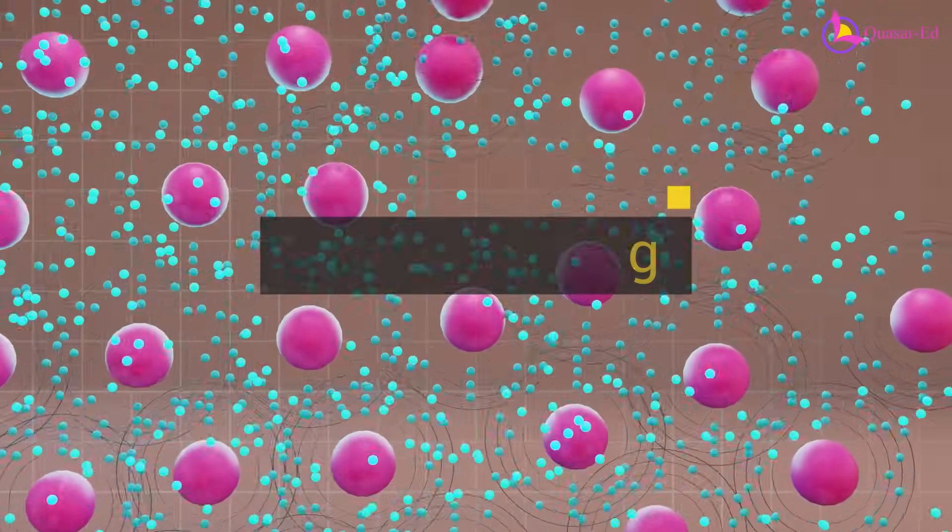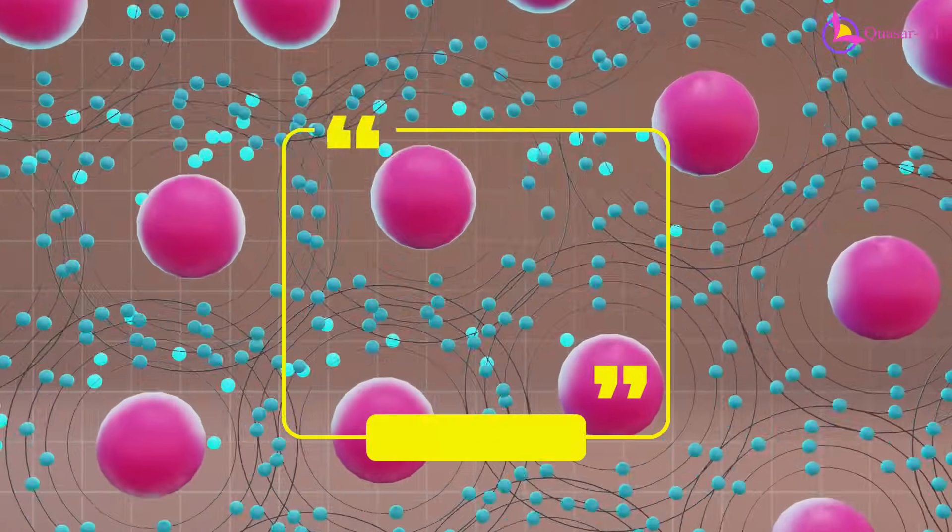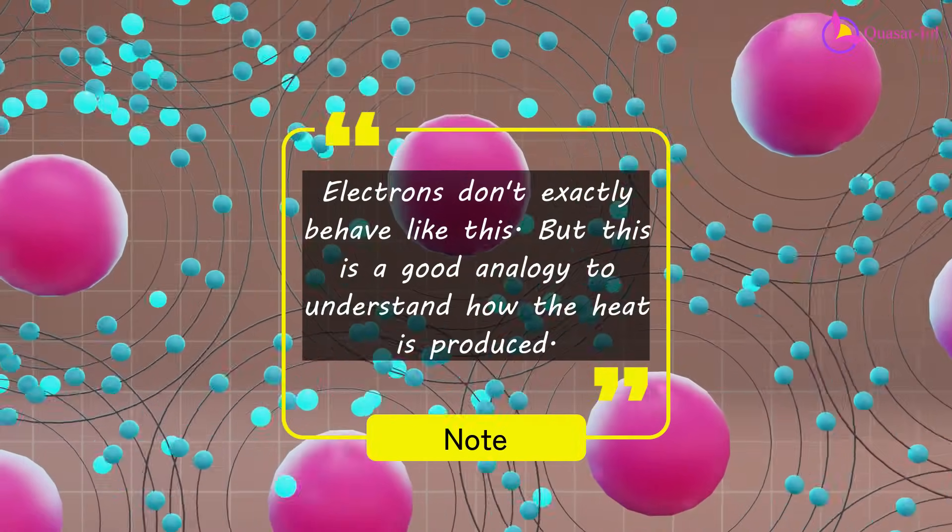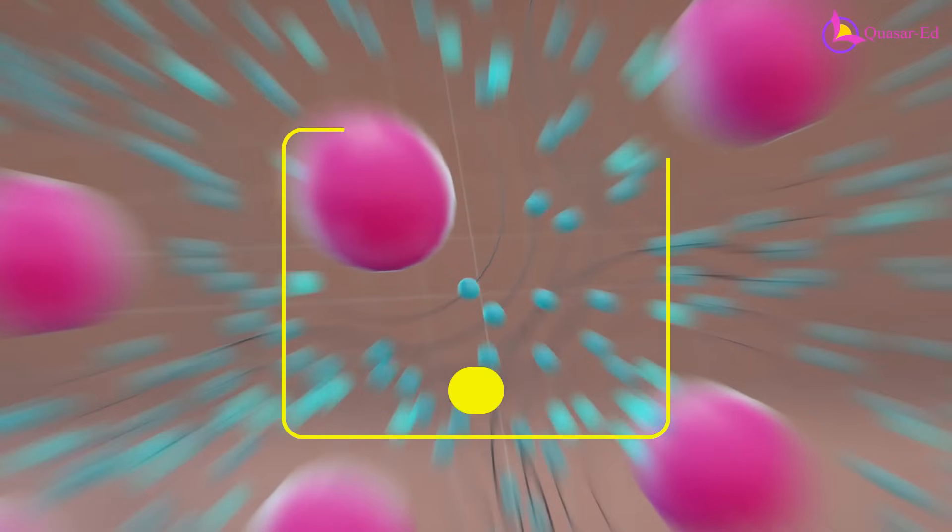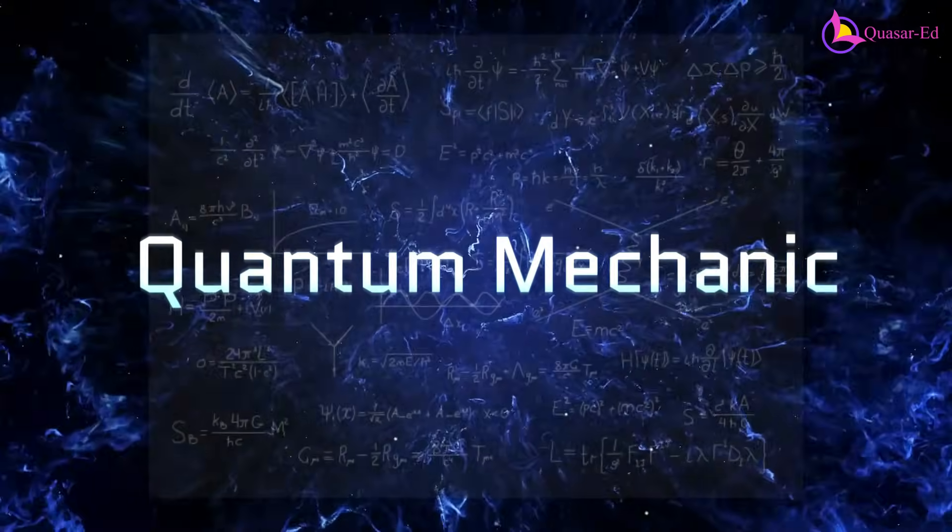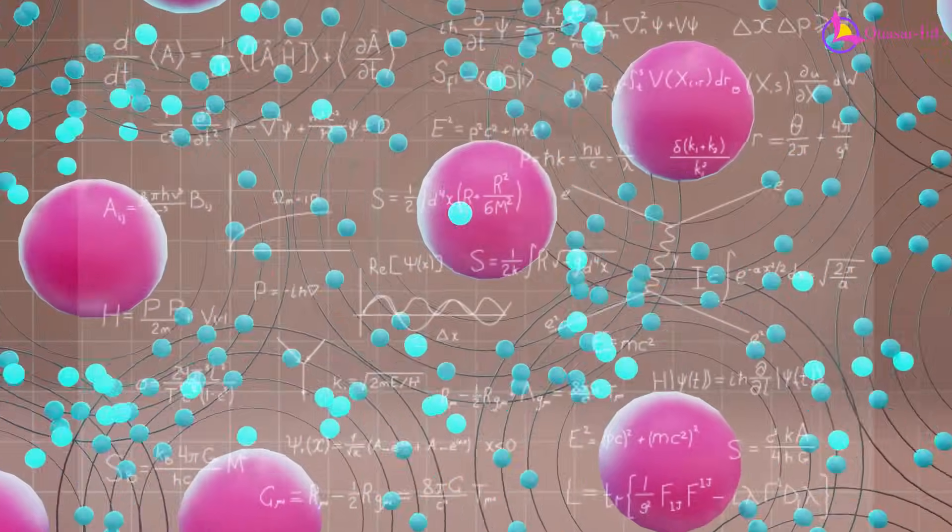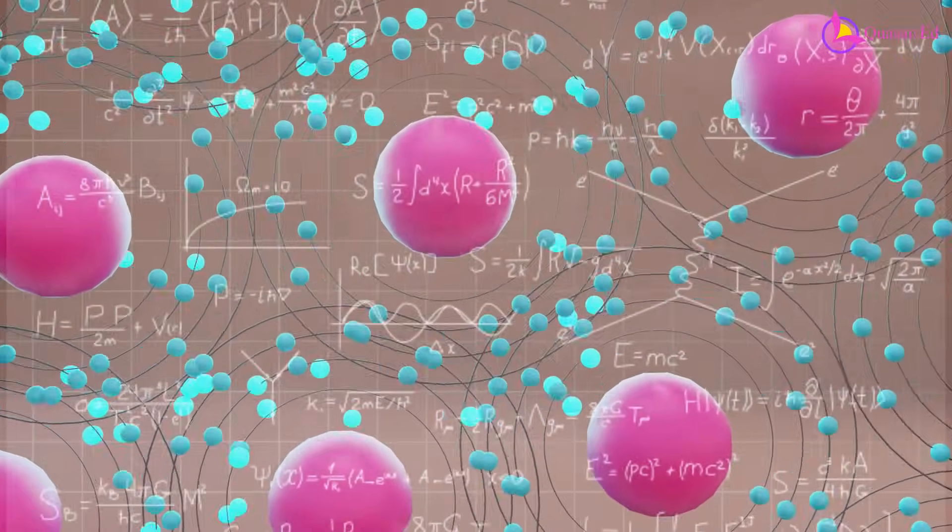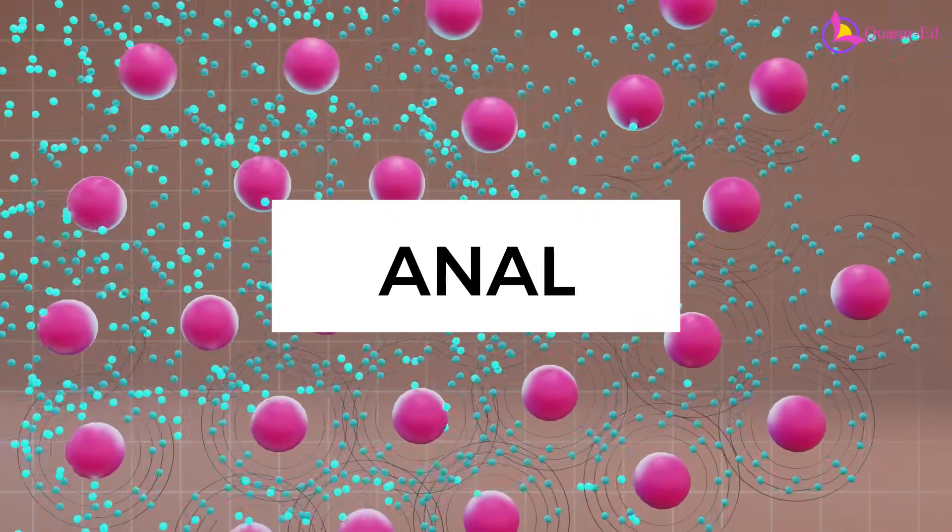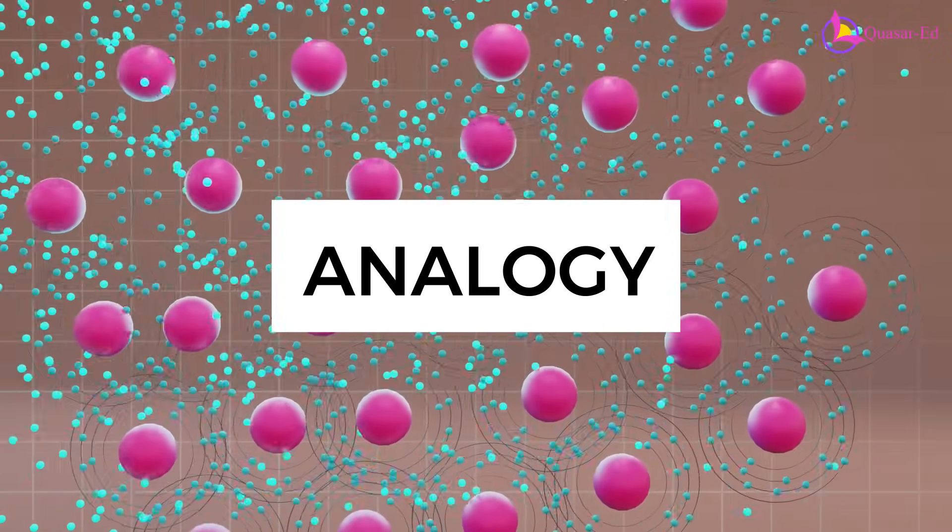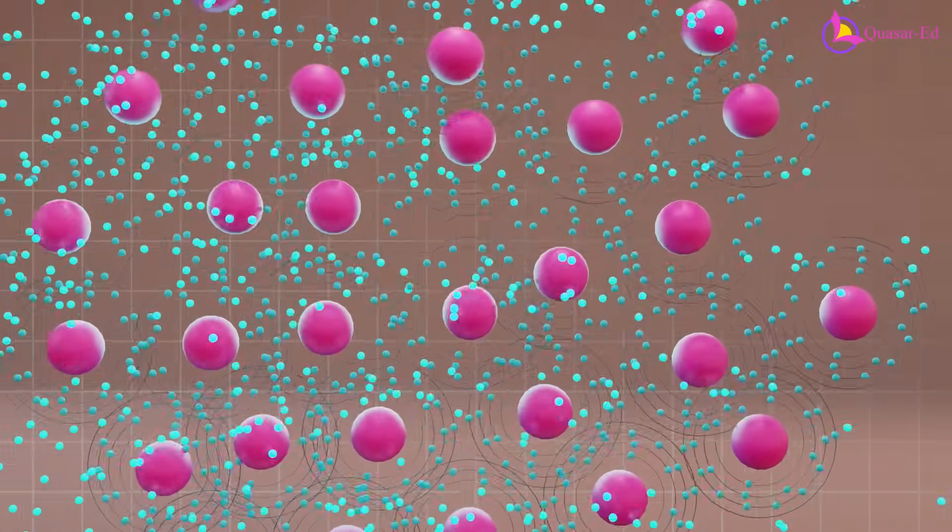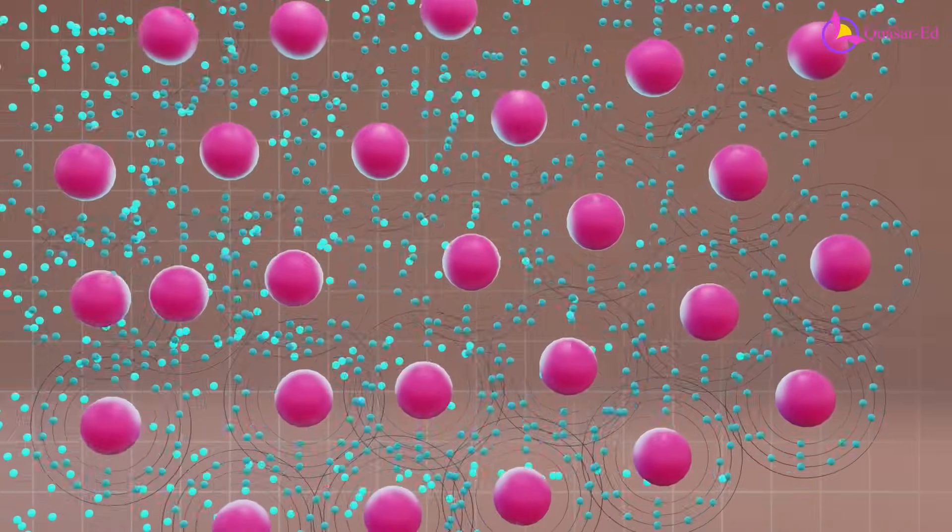While we often describe this as collisions, it's important to note that electrons don't behave like billiard balls. Their behavior is influenced by the principles of quantum mechanics, and what actually happens is more complex than our analogy suggests. This level of detail is beyond the scope of this video, but the analogy helps us understand how energy is transferred to the atoms, causing their vibrations to increase and generating heat.